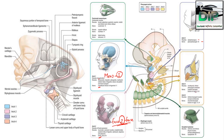The sixth pharyngeal arc gives rise to the intrinsic laryngeal muscles except cricothyroid. The nerve is the recurrent laryngeal branch of vagus and the 11th nerve. So these are the derivatives.